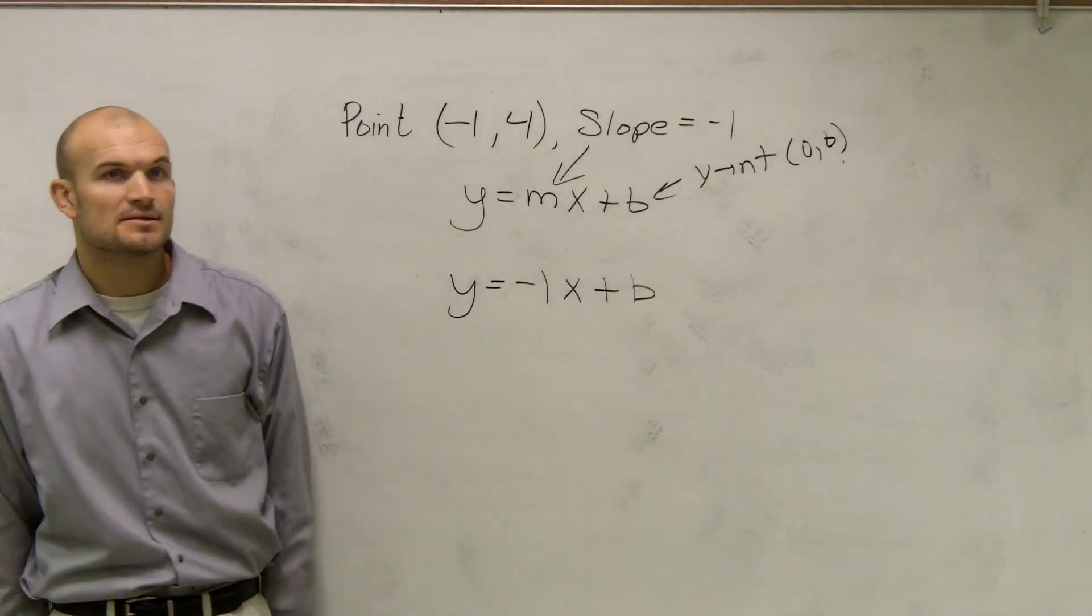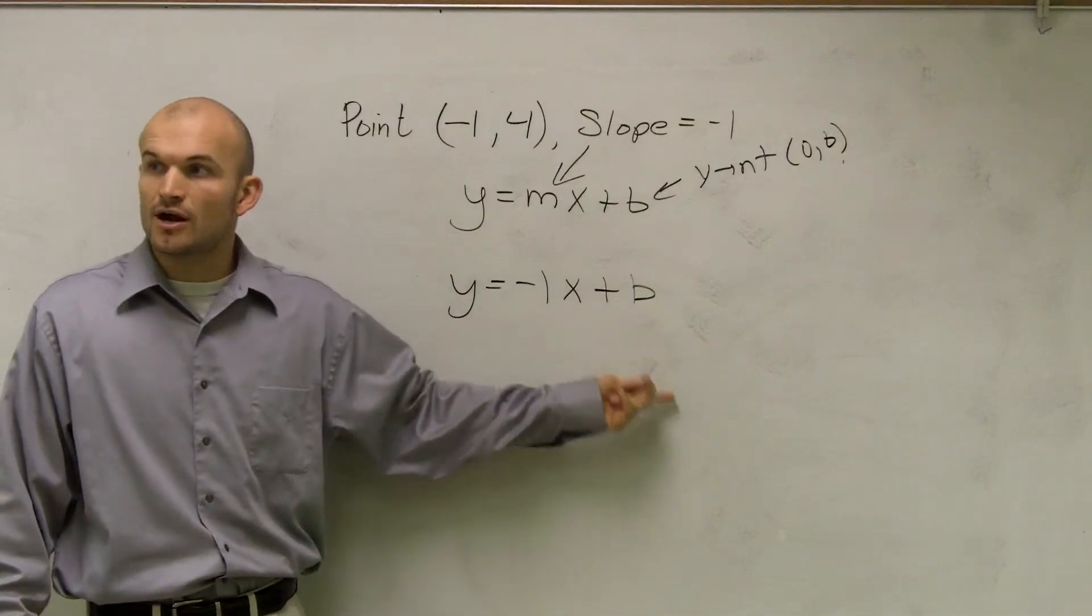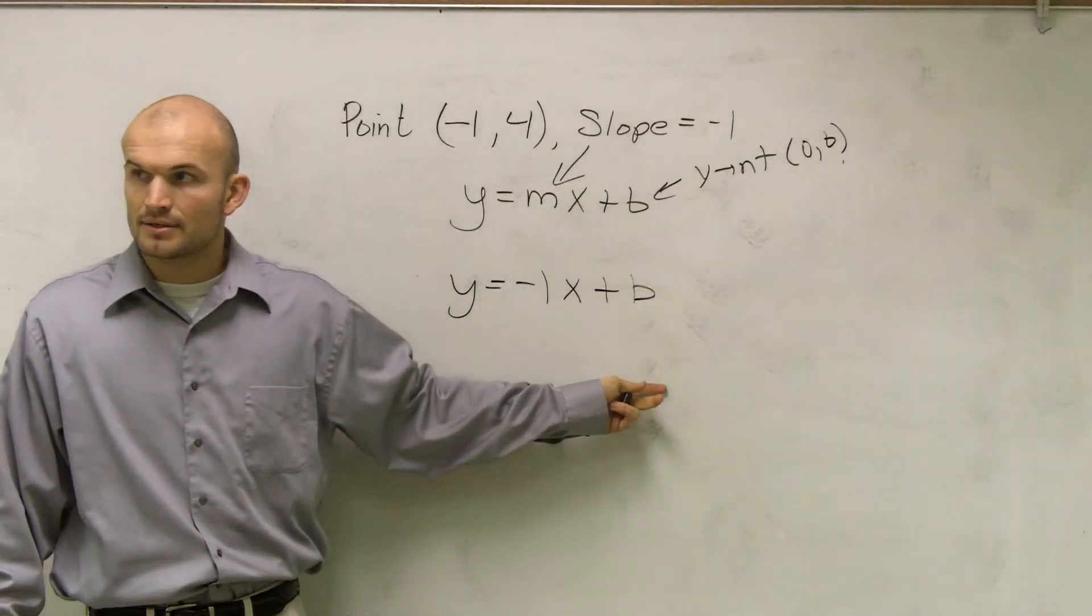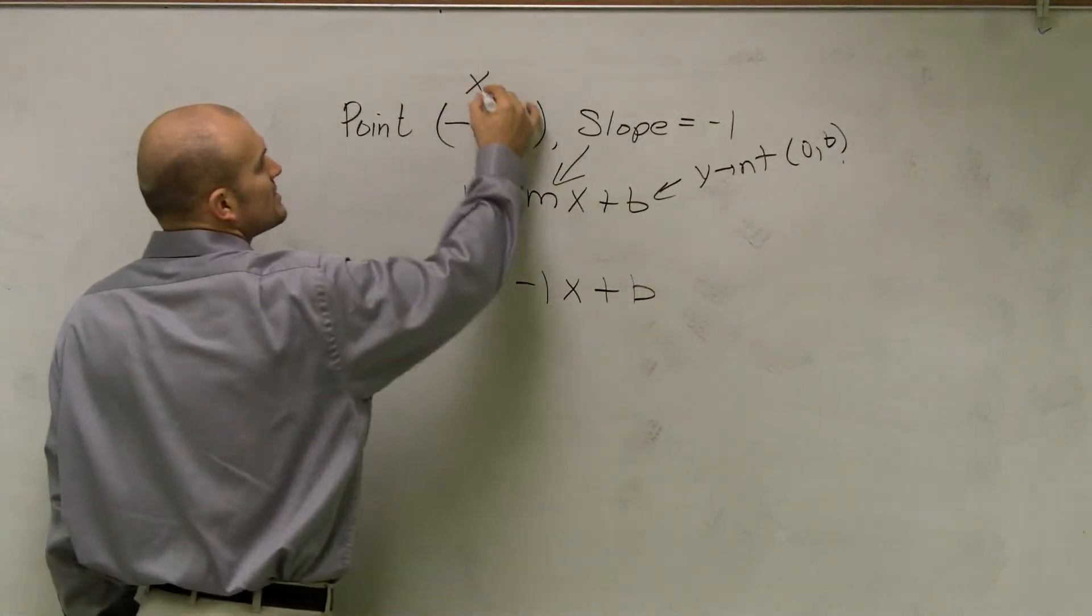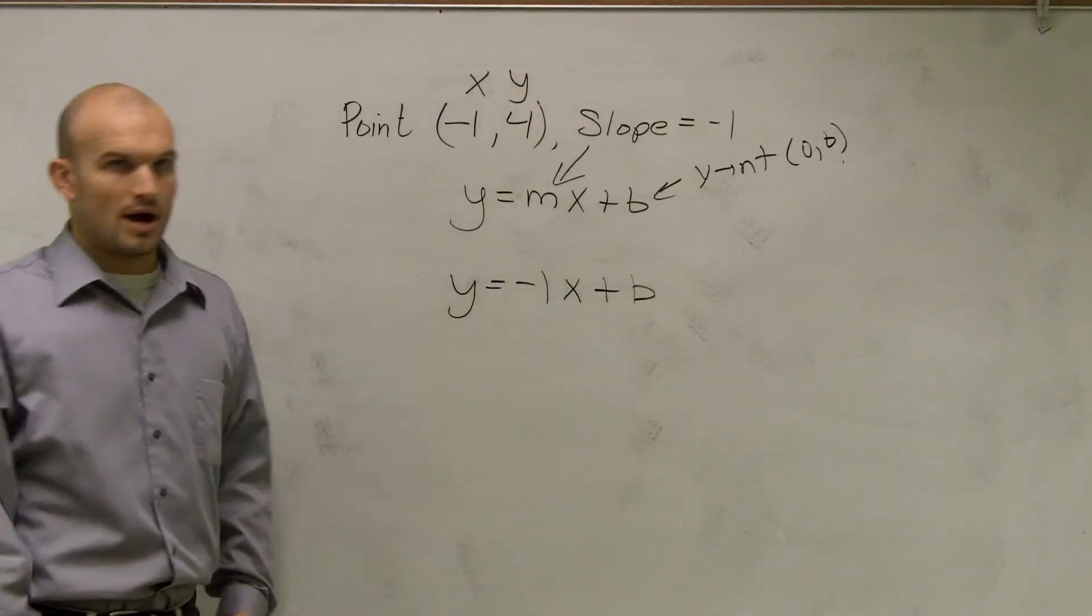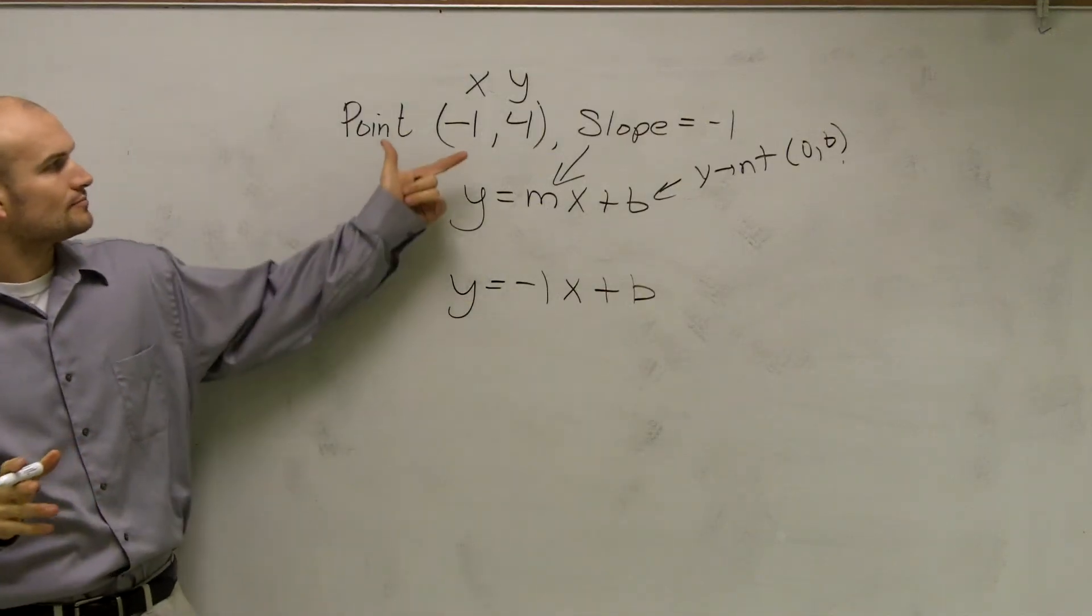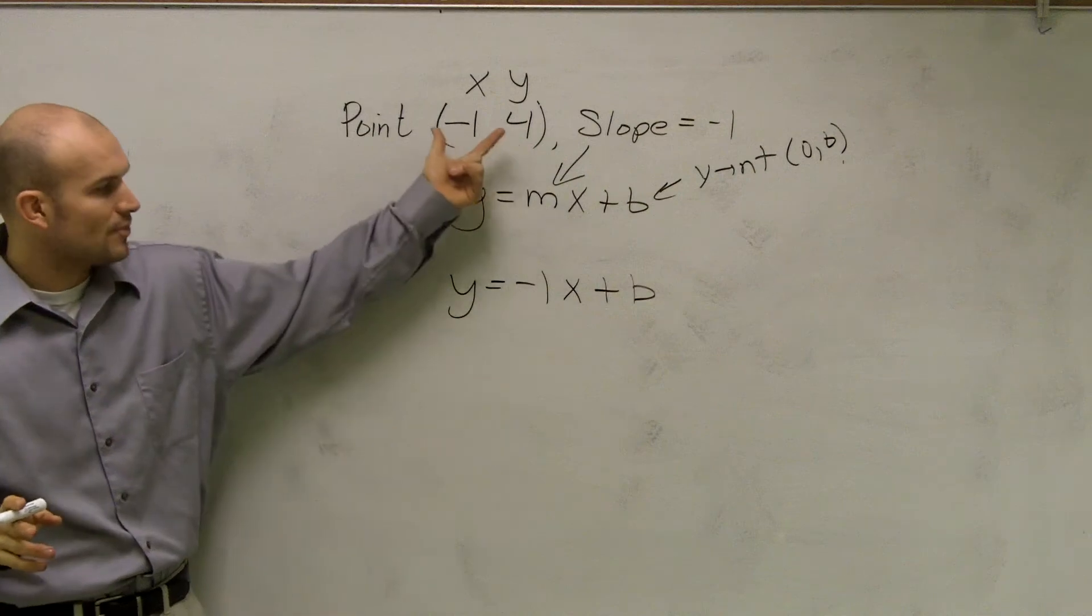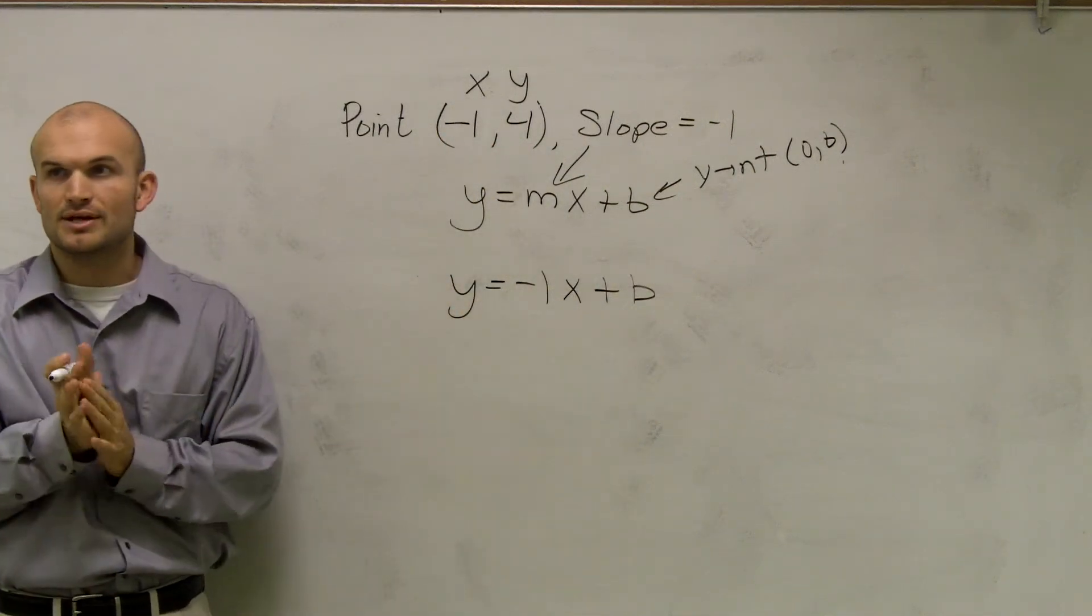Now, the next thing is, we still need to figure out what our b is, right? We need to figure out what the y-intercept is. So the only other information we're given is we're given this point, which we call xy, right? Every point has an x and a y. And guys, at the bell rings, just let me go through it, OK? So here's my point xy. Well, where do you guys think I can plug in xy into my equation?